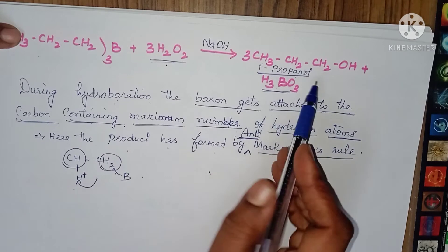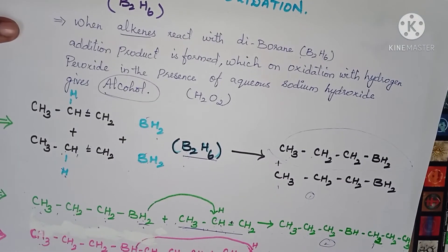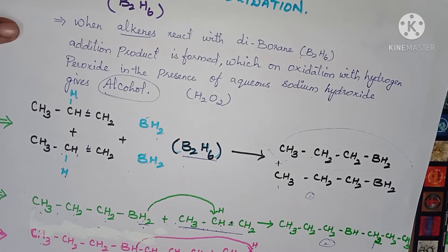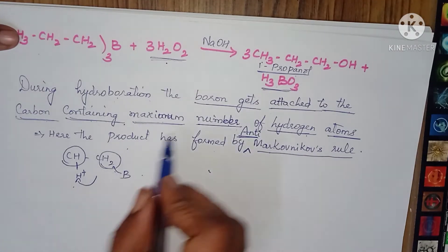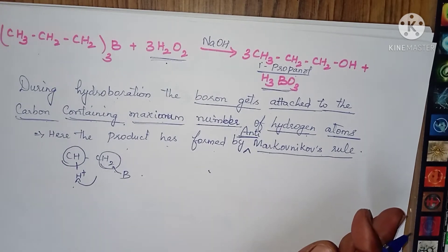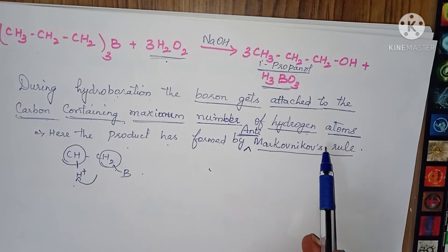Maximum number of hydrogen atoms — that means here three. See CH3-CH2-CH2 three times bonded to B. Boron is going to attach to the carbon with the maximum number of hydrogens. Now here what they call is anti-Markovnikov's rule — wherever hydrogen atoms are higher on the carbon atom, boron goes to attach in that place.